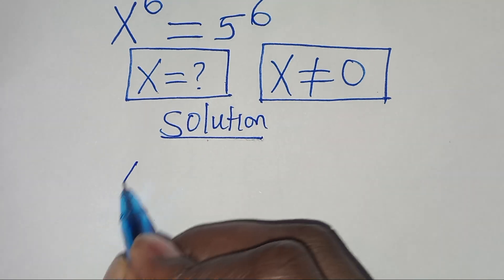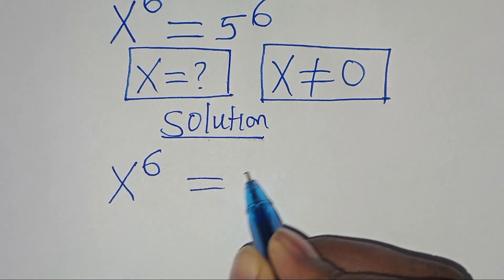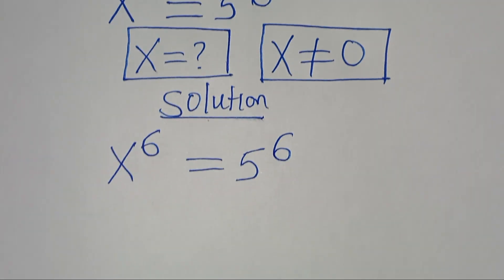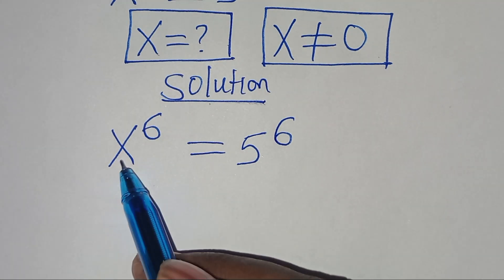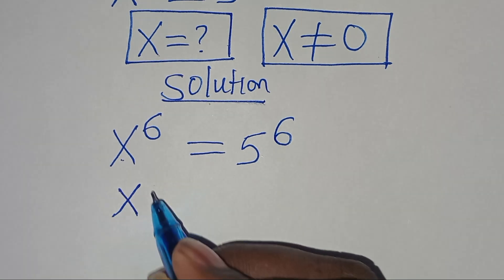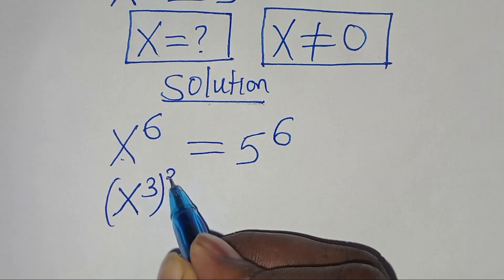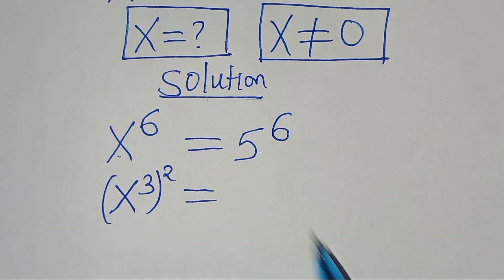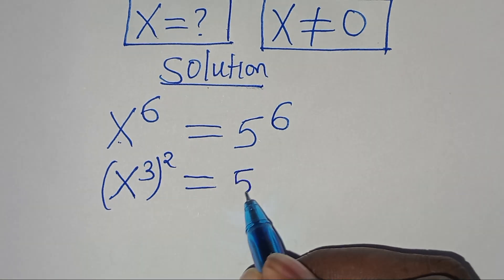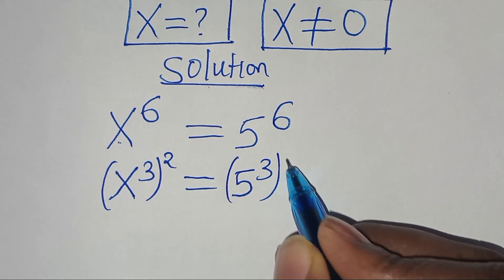We have x to the power of 6, equal to 5 to the power of 6. We can express x to the power of 6 as x to the power of 3, raised to the power of 2. This is equal to 5 to the power of 6, which we can express as 5 to the power of 3, raised to the power of 2.